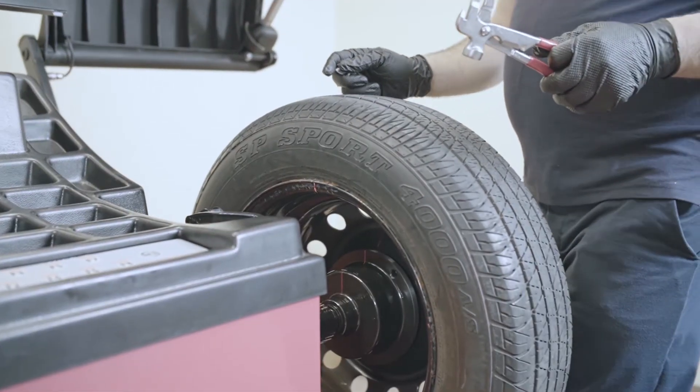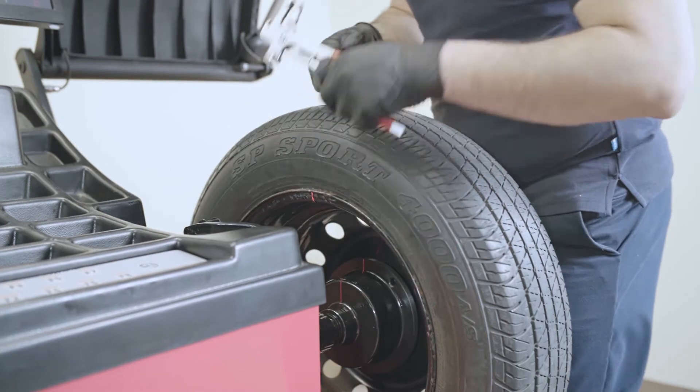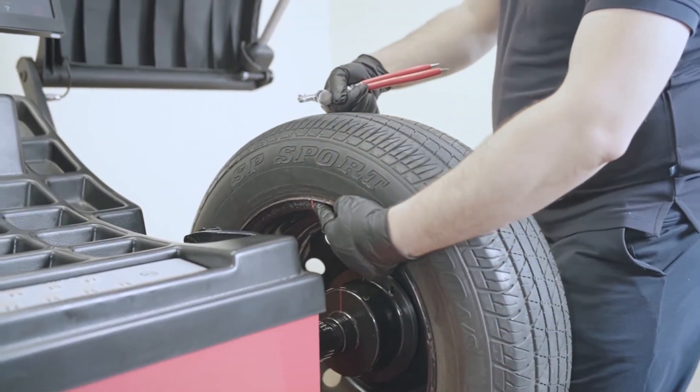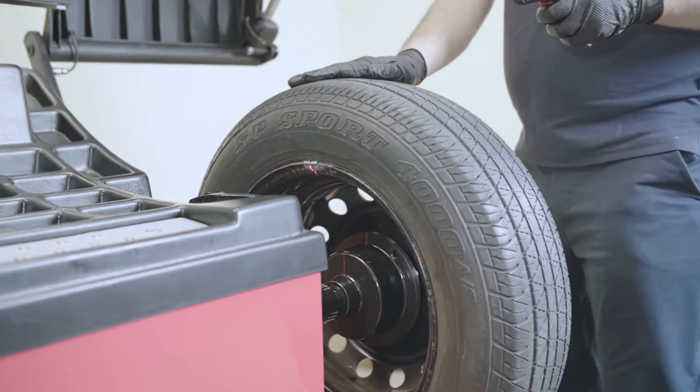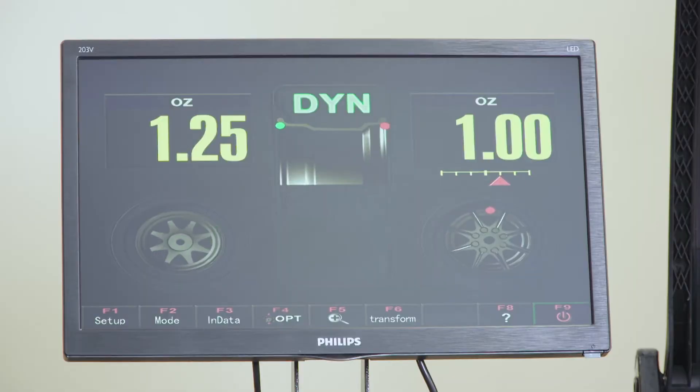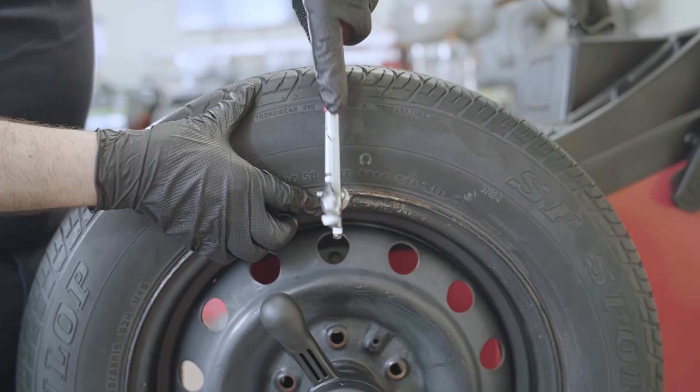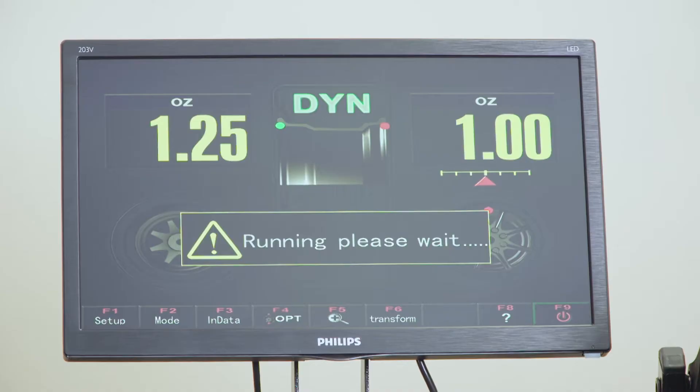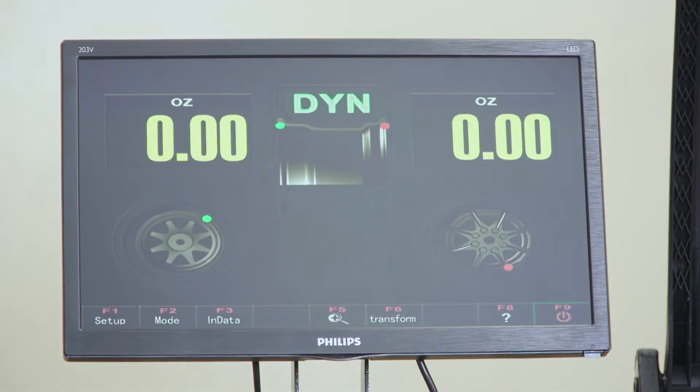We're going to put the weight on the inside first. As you can see the laser here. Put the weights on. That confirms that our calibration is OK.